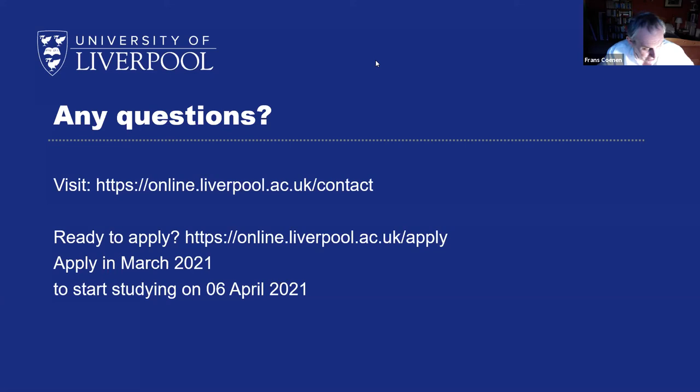Regarding a research master's degree: there are different types of master's degrees. An MRes is a research-based master's which would be 180 credits but, unlike our master's where there are 60 credits of project work, an MRes would have 120 credits of project work — so a lot of it would be project-based.